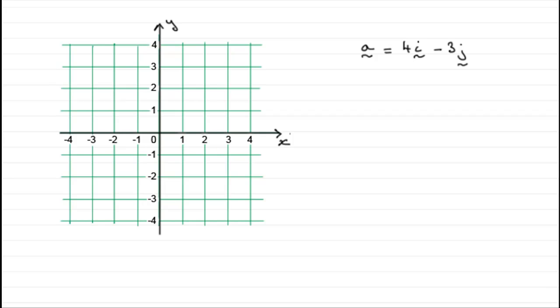Now suppose we had a vector a which was equal to 4i minus 3j. Remember i and j are the unit vectors parallel to the x and y axis respectively. So, what would the vector 4i minus 3j look like?